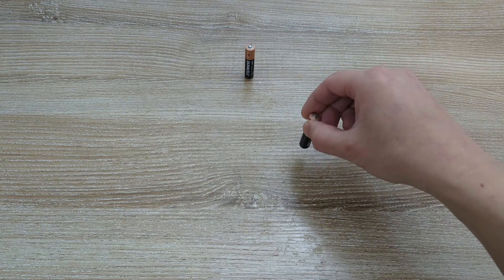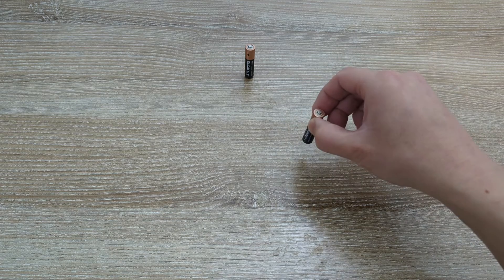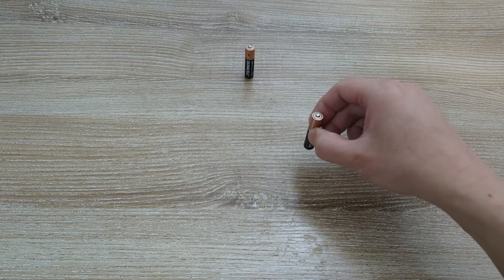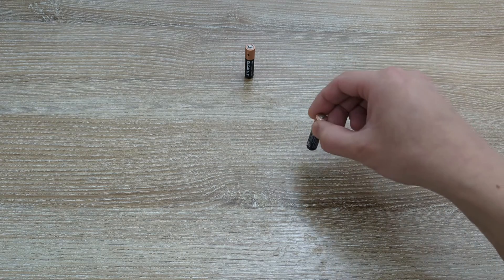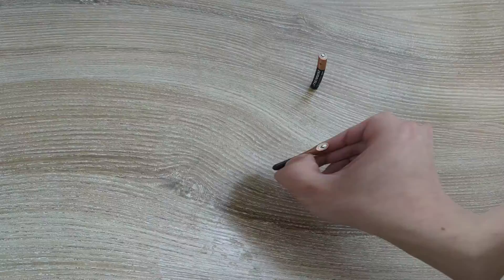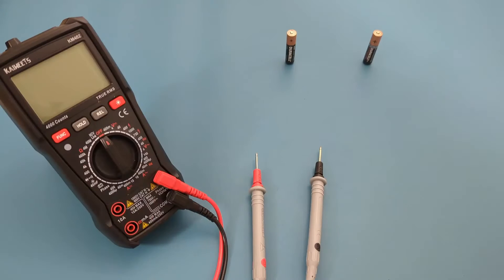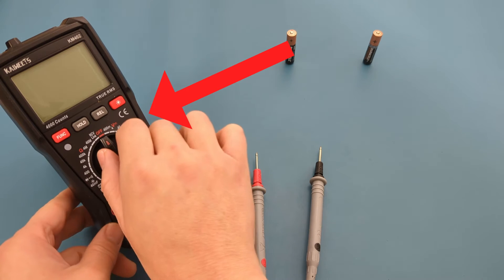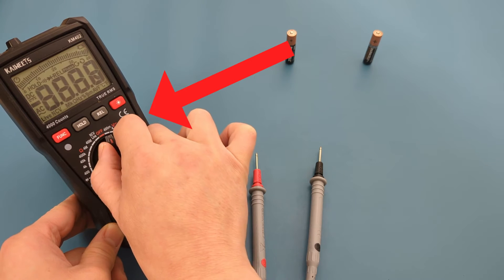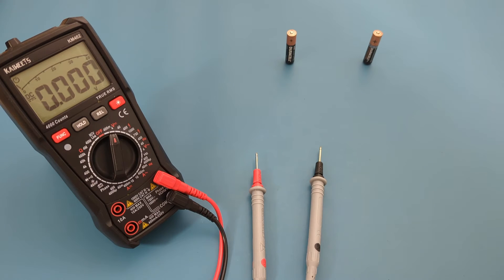I'll use a multimeter to measure the battery's voltage to double-check the bounce test findings. Set the dial on the multimeter to the voltage setting. When testing a 1.5-volt battery, adjust it to the 4-volt setting to get a more accurate reading.